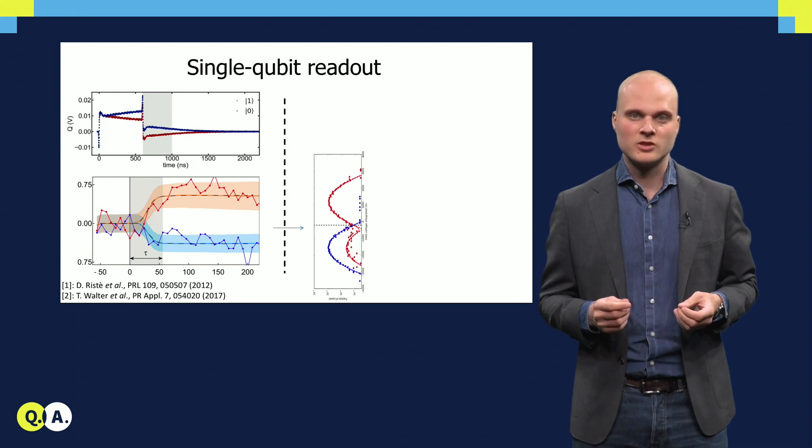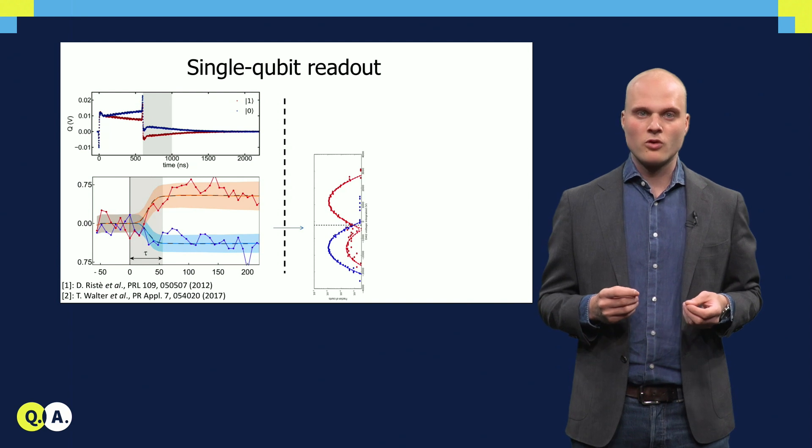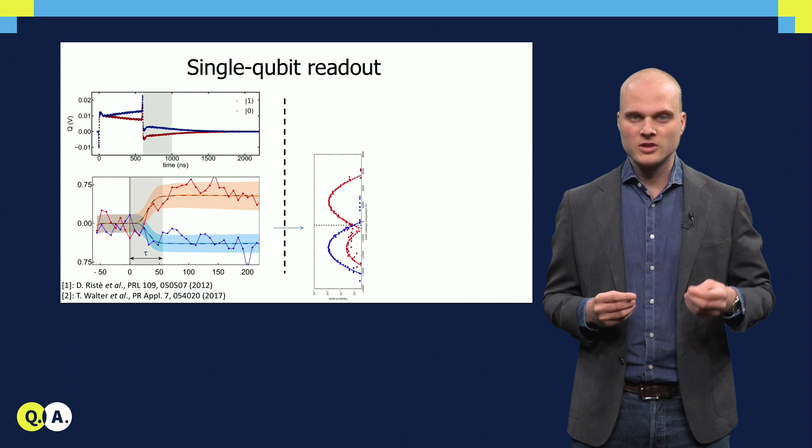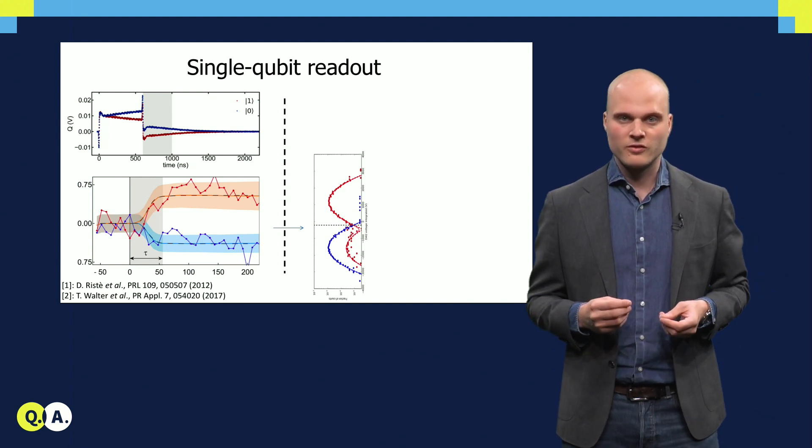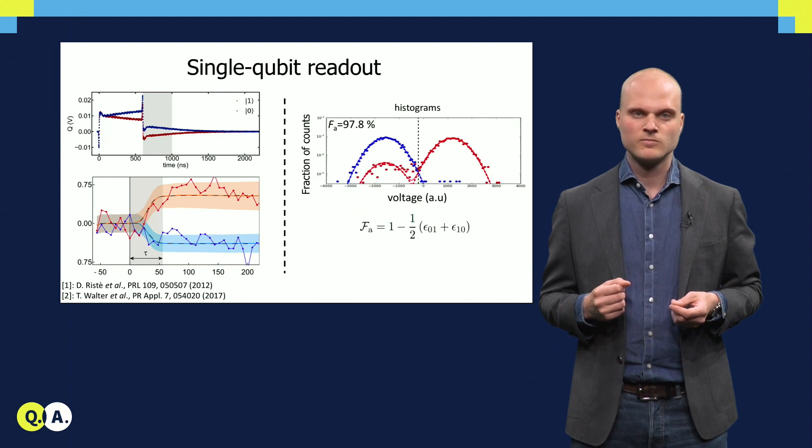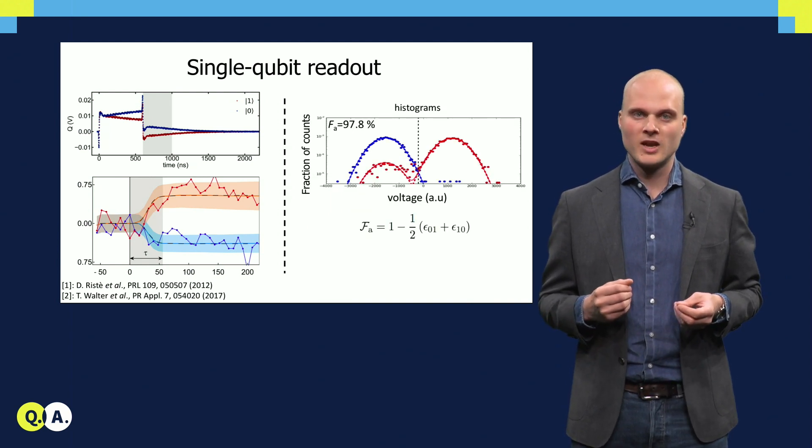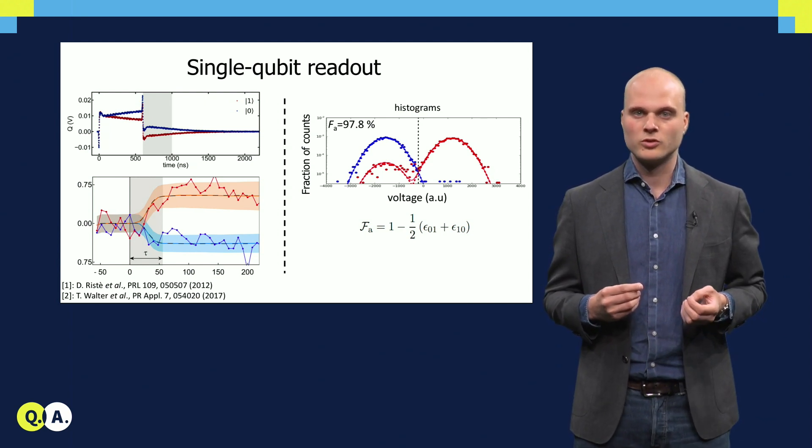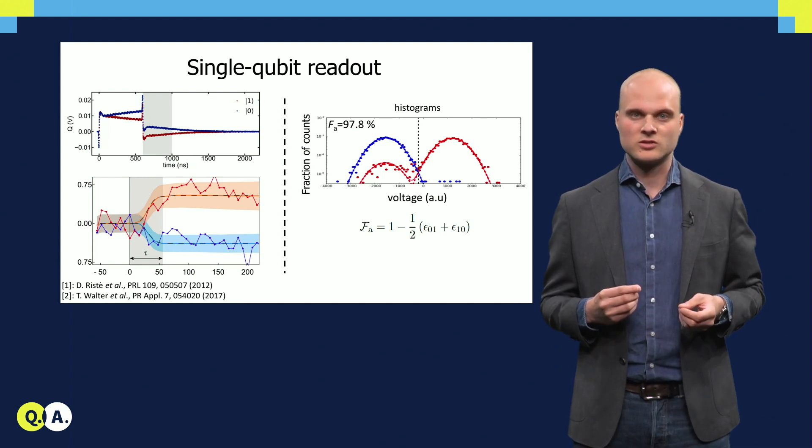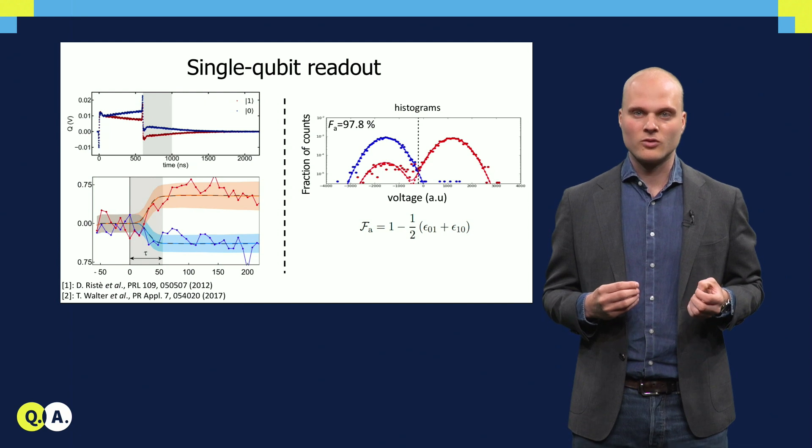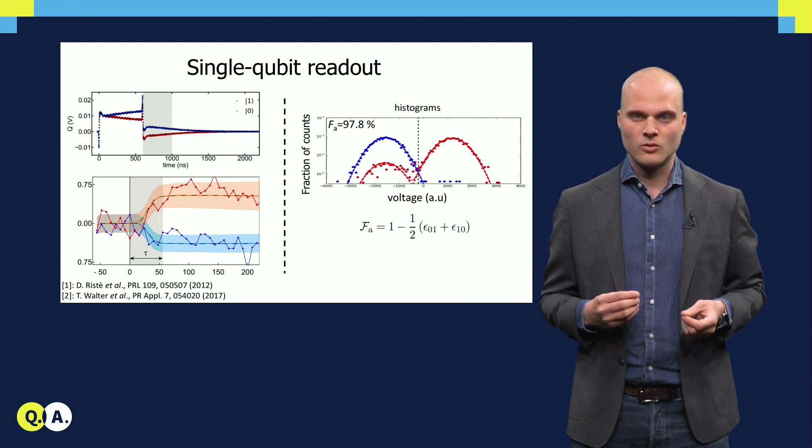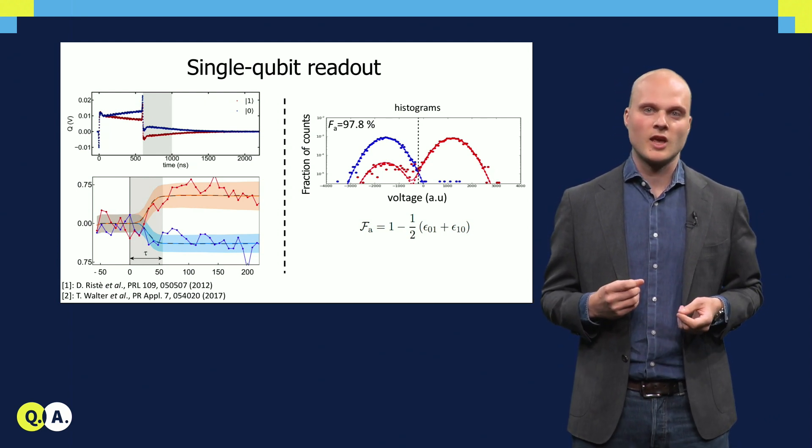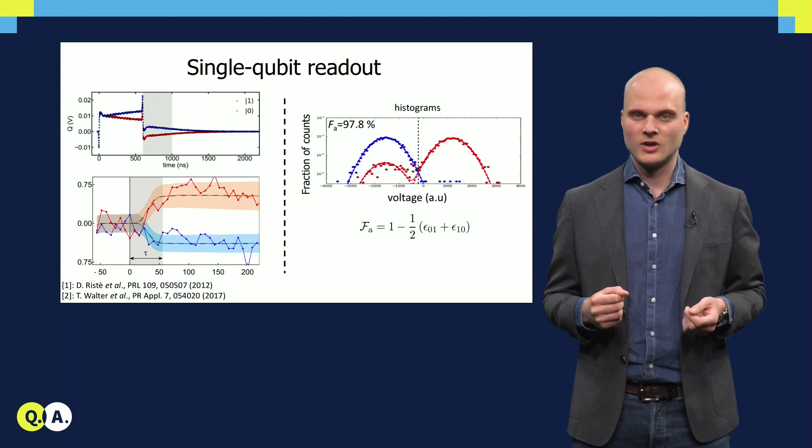To quantify how well qubit measurement is performing in the presence of this noise, we record the integrated voltage of thousands of individual traces. By plotting these individual shots in histograms, we extract the fidelity of the measurement. The fidelity expresses the probability that the measurement returns the right outcome, averaged over the two possible qubit input states. Epsilon zero one expresses the probability for erroneously getting outcome one for a ground state input, and epsilon one zero vice versa. In this case, aided by the world's lowest noise superconductive amplifiers, we can achieve a fidelity close to 98%.